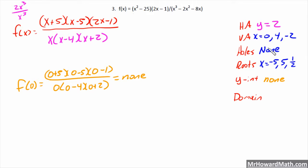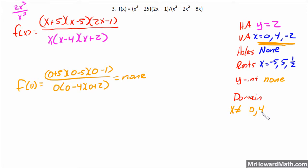The domain is anything x cannot equal — that is, any value giving a vertical asymptote or a hole. So x cannot equal 0, 4, or -2.